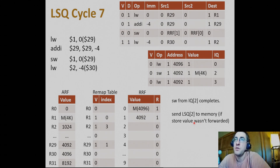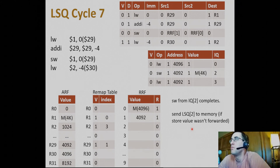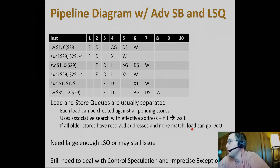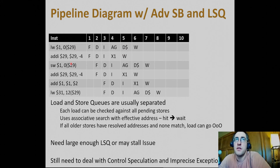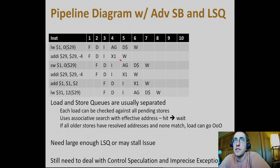The store word finishes and we do the load-store queue access. Most processors will also do store-to-load forwarding since it's cheaper. In the pipeline diagram with an advanced scoreboard that predicts when values are ready and a load-store queue, M1 is replaced by AG (address generation) and M2 by the data cache (D$). The store word can actually issue because the advanced scoreboard knows that $29 is going to be ready in one cycle, so it issues proactively — it can forward that value into the address generation unit on the next cycle.